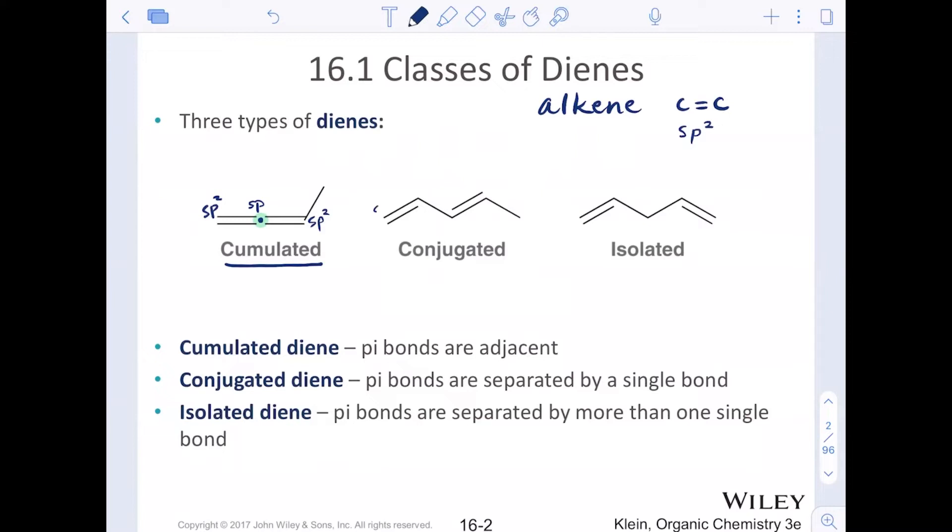Conjugated is when we have a system of two double bonds that are separated by a single bond. Every atom in that system, the four carbons that I've highlighted there, are sp2 hybridized. That is the class of diene that we are going to be talking about in this chapter. Isolated dienes are a set of two alkenes that are separated by more than one single bond. They are going to be separated by an sp3 hybridized center.